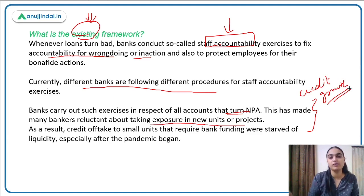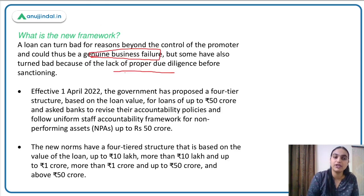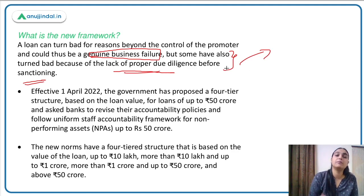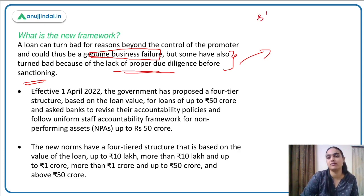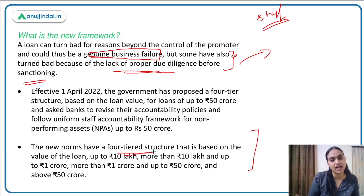A new framework has been approved because a loan can turn bad for various reasons. At times genuine business failure leads to NPAs; at times lack of proper due diligence before sanctioning is the cause. Where people are genuinely approving loans with no wrongdoing, they should not be penalized. The proposed new staff accountability framework suggests a four-tier structure: loans up to ₹10 lakh, between ₹10 lakh and ₹1 crore, between ₹1 crore and ₹50 crore, and beyond ₹50 crore, each with its own reference set of rules.